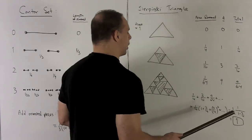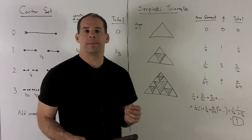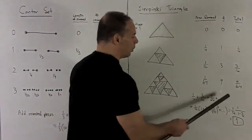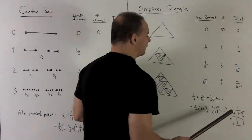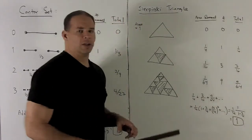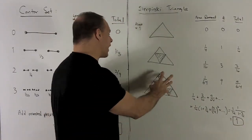Absolute value of r is less than one, so the series is going to converge with sum one fourth times one over one minus three-fourths. Got a four hits a one fourth in the bottom, which leaves me with a one. So I perform this process infinitely often, I pulled all the area out of this triangle.